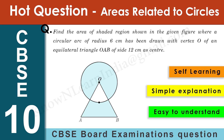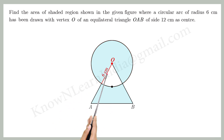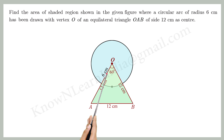Hello friends, we are going to solve a question from areas related to circles of class 10. Find the area of the shaded region shown in the given figure, where a circular arc of radius 6 cm has been drawn with the vertex O of an equilateral triangle OAB of side 12 cm as center.